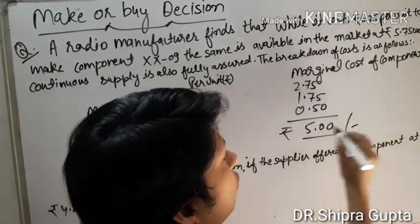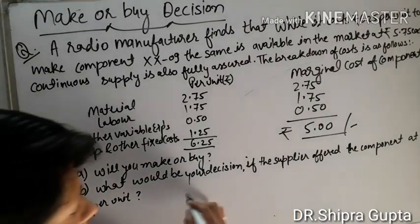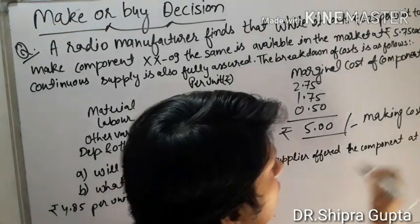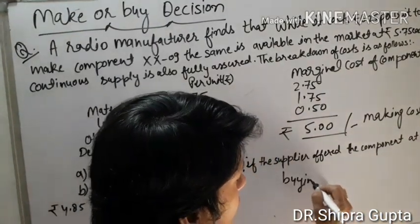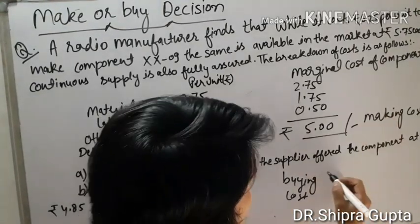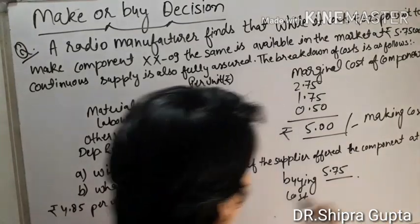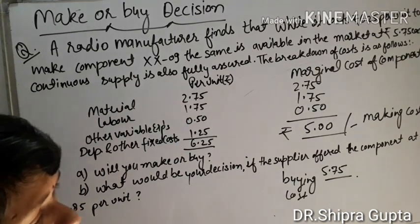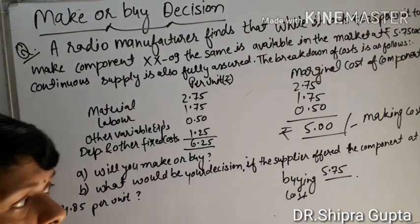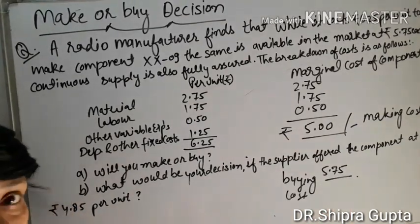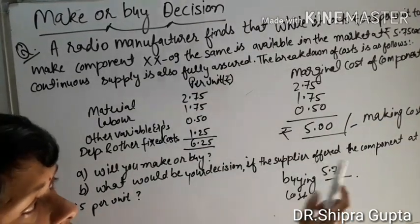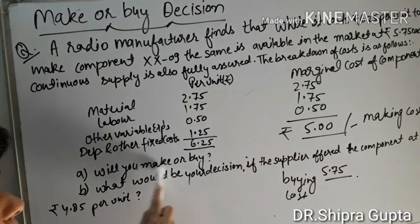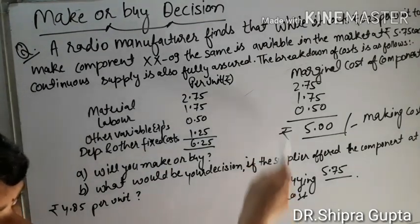The marginal cost comes to ₹5.00 per component — this is the making cost. The buying cost is ₹5.75. Since our manufacturing price of ₹5.00 is cheaper than the buying price of ₹5.75, we save ₹0.75 by making. The comment is: we will save ₹0.75, so we will make this component. We accept the first proposal to make, because this price is cheaper than the buying price.